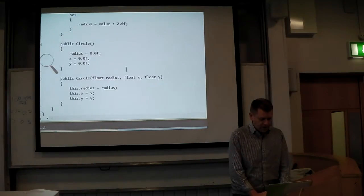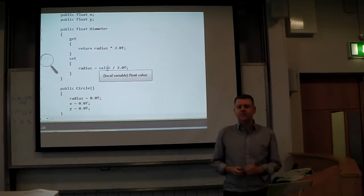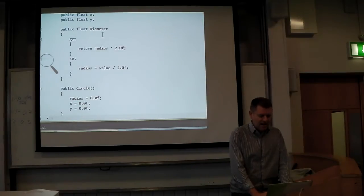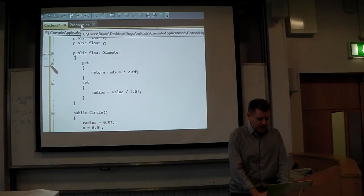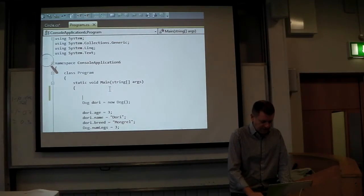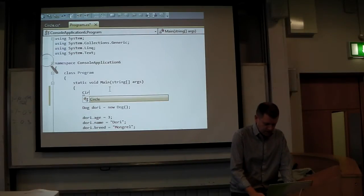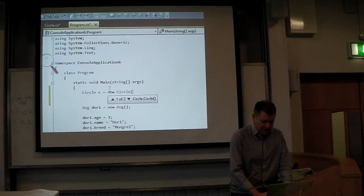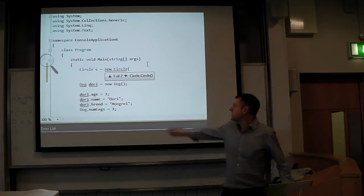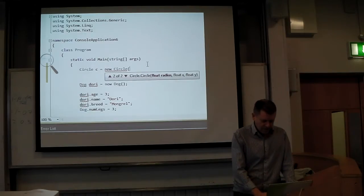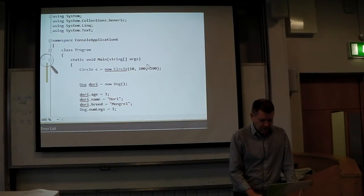So those are all the new keywords — get, set, and value. I'm going to show you what those actually correspond to by making an instance of this class and using this property. Here's my little program with all the classes we previously made. This time I'm making an instance: Circle c = new Circle. I'll pass in a radius of 10 and a center point of 100, 100.